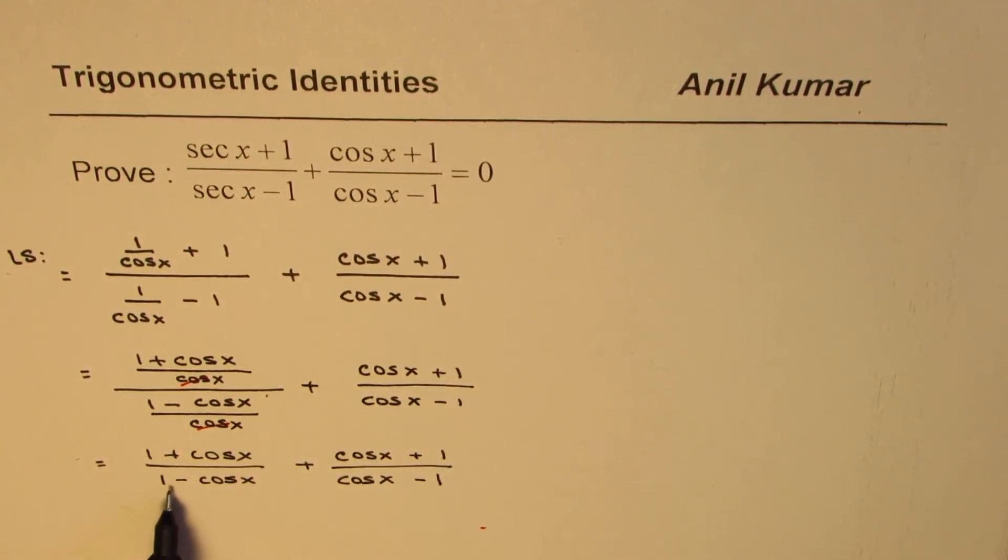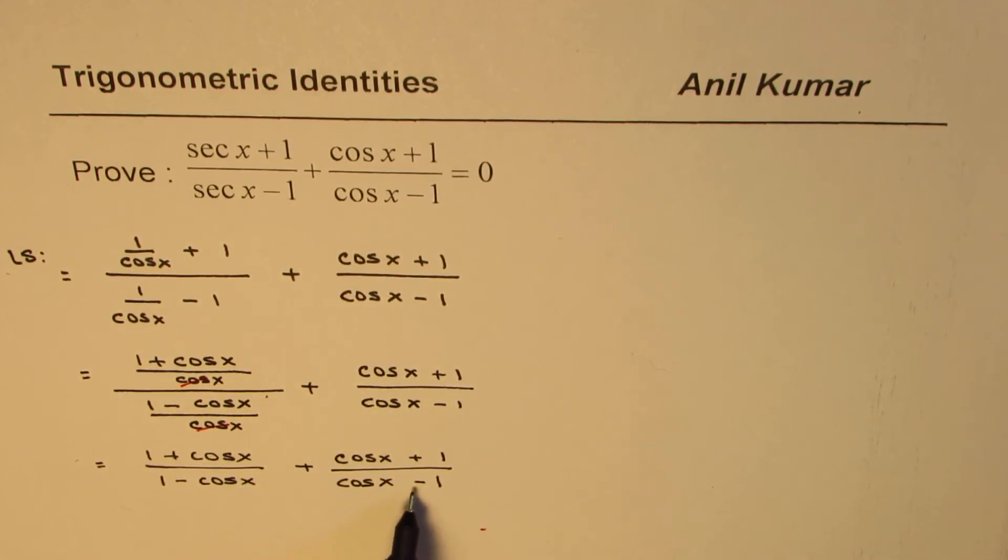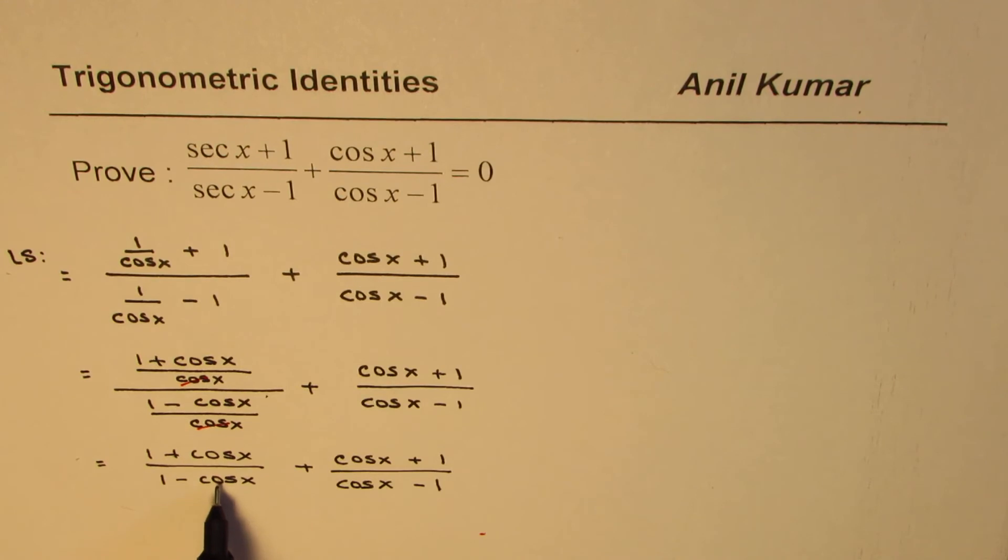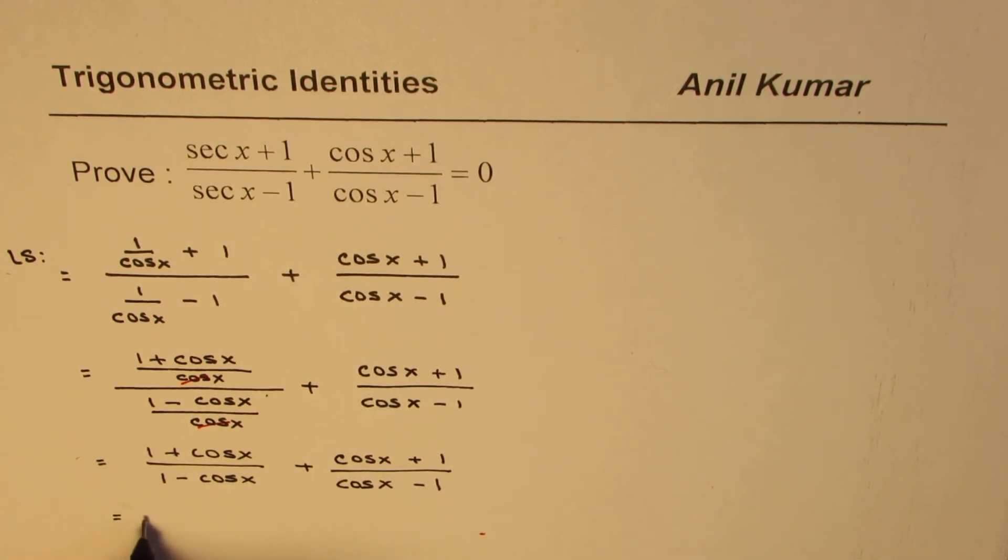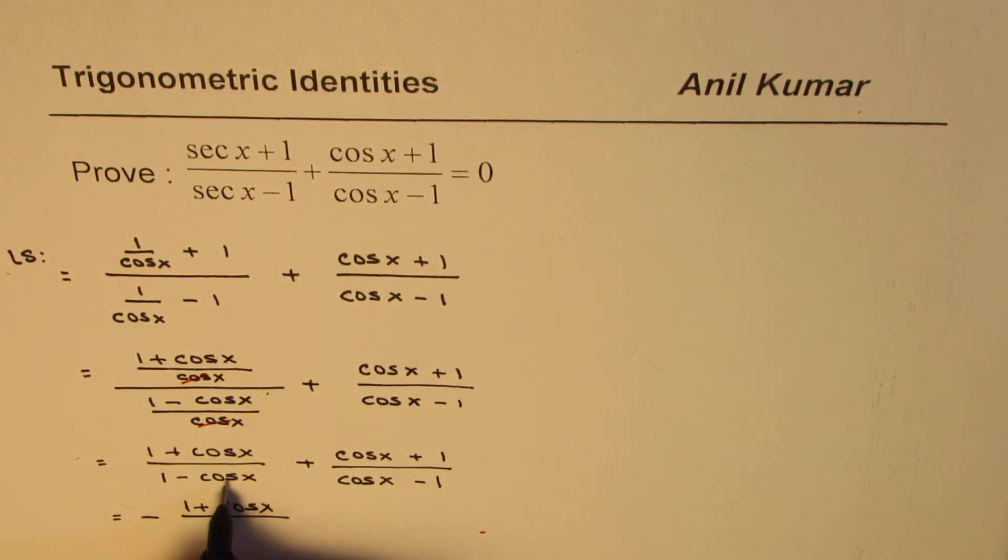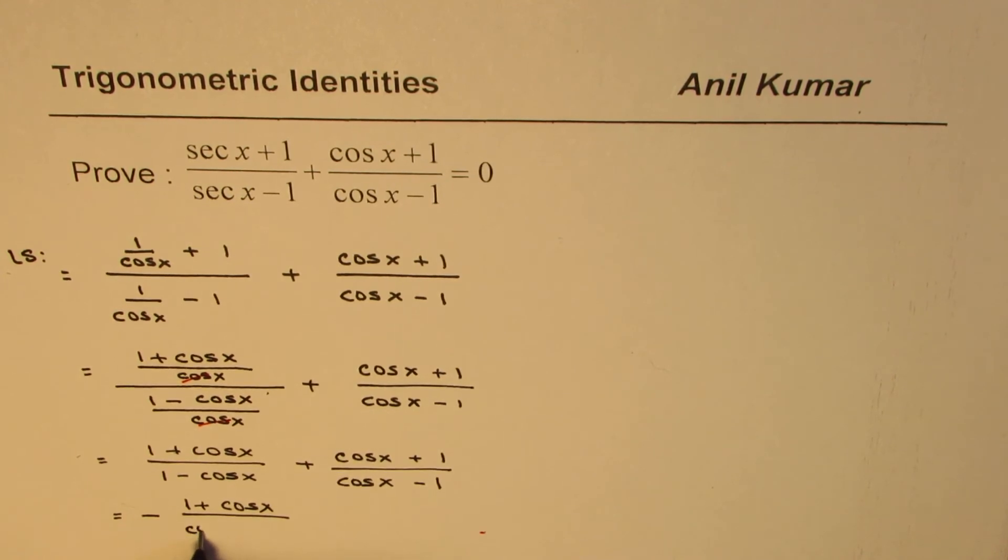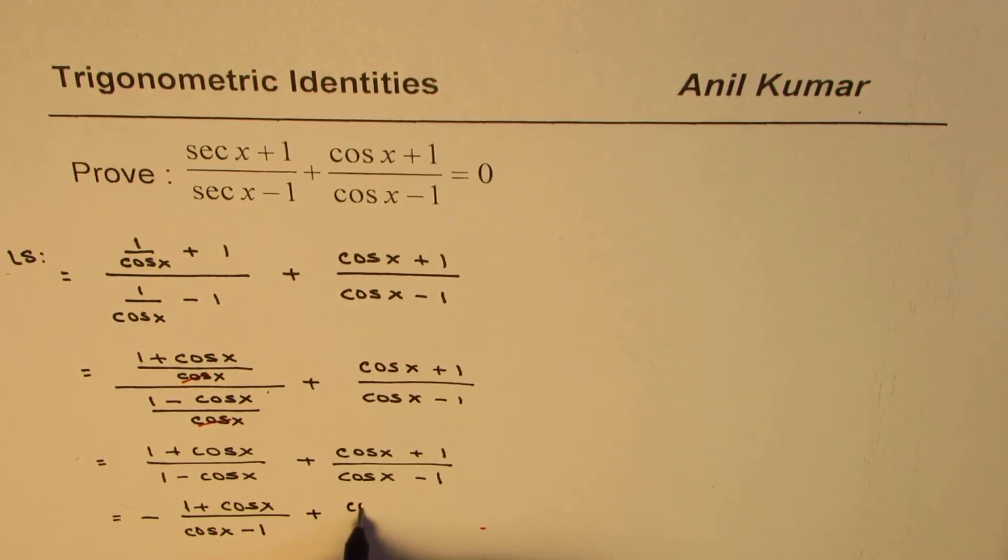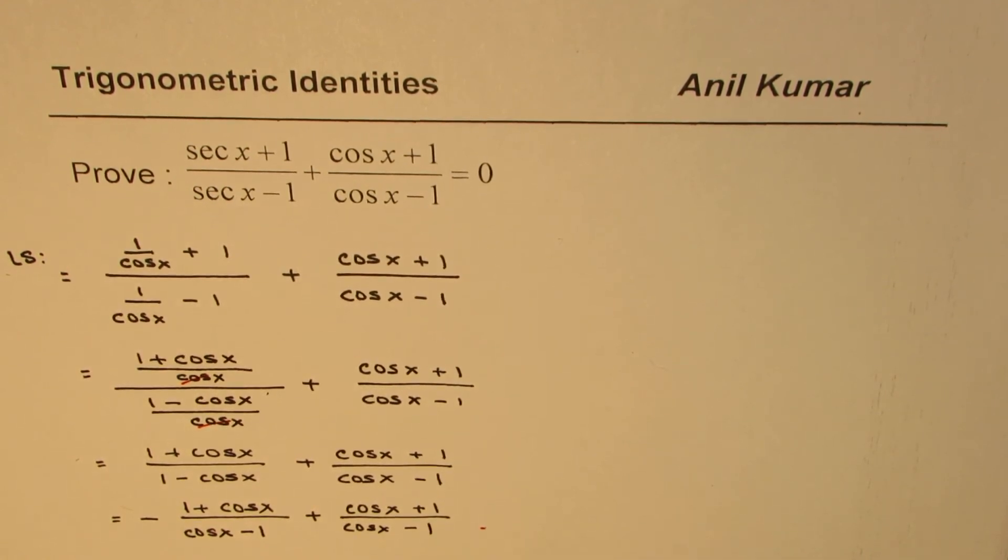What you notice here is this is 1 - cos x and then we have cos x - 1. To make this cos x - 1, we could take the negative of this. So that makes it negative of (1 + cos x)/(cos x - 1) plus (cos x + 1)/(cos x - 1).